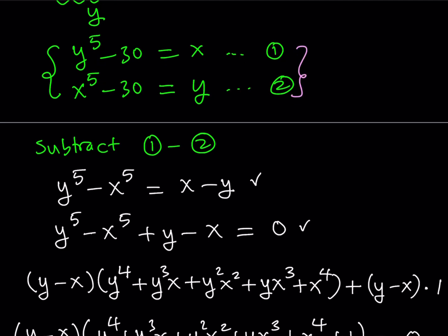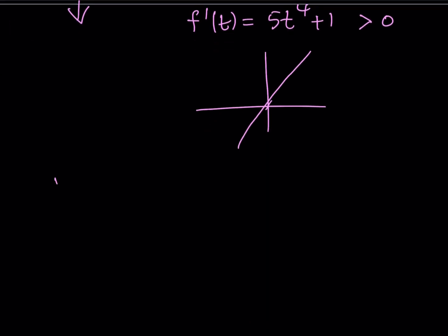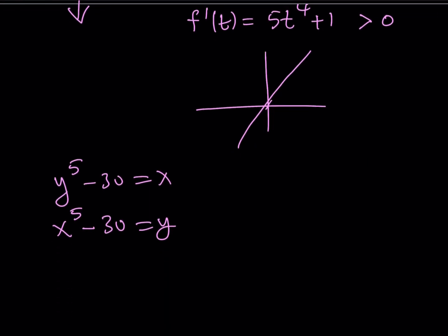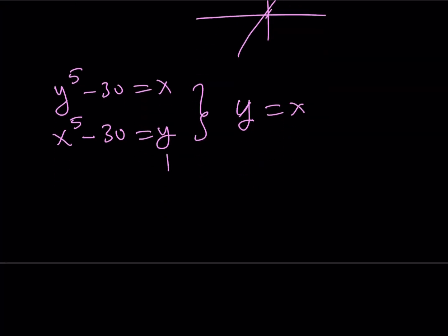So here's our system. We have y^5 - 30 = x and we have x^5 - 30 = y. And we just said that y has to equal x from here. That's the result we got. y = x. What is that supposed to mean? Well, we just invented y. So let's take a look at the second equation. It doesn't matter which one, by the way, but the second one is easier to handle in this case.